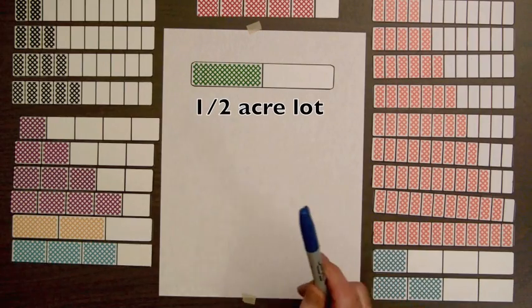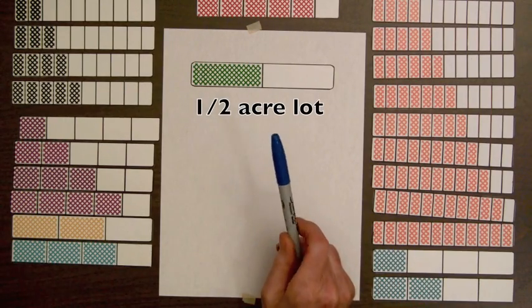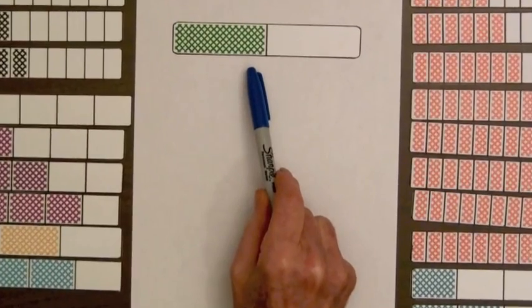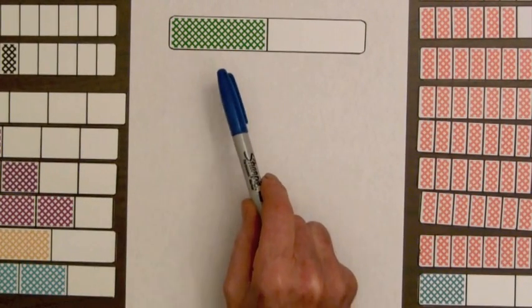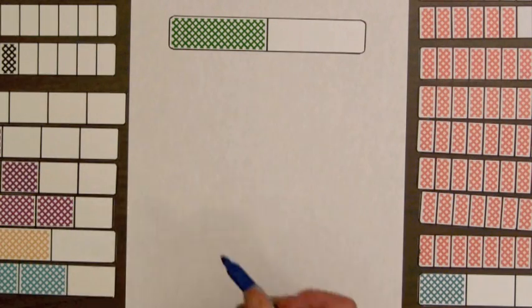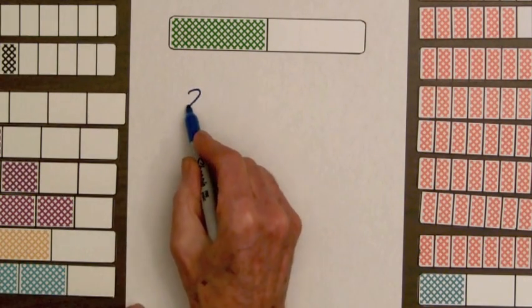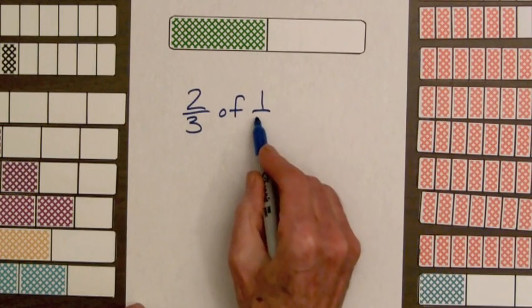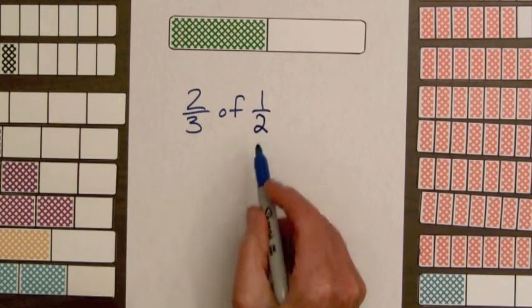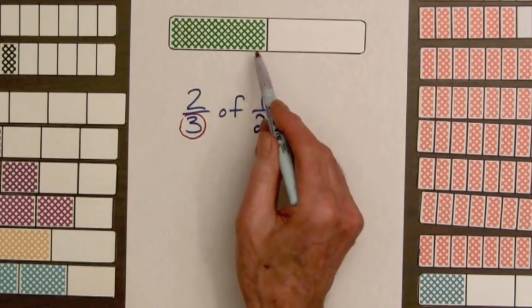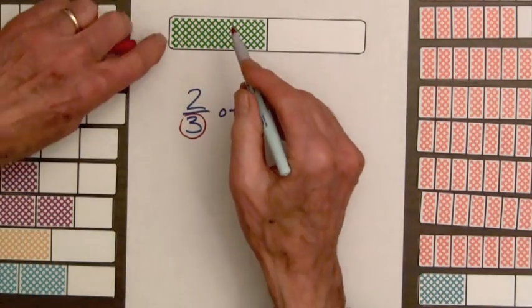The second family now decides that they need a bigger garden. So they will use two-thirds of their one-half acre lot for the garden. This larger garden will be what fraction of an acre? So let's write down what we want to do here. We want two-thirds of one-half. The three down here indicates we are going to break this into three equal parts, and the two means we are going to take two of them.